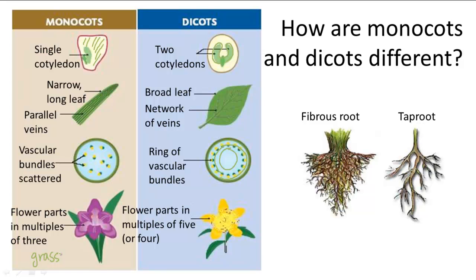You can also remember that monocots feed the world, so to speak. Dicots include daisies, roses, and carrots — they all have broad leaves, and daisies and roses have petals in multiples of four or five, so that's how you can remember dicots.